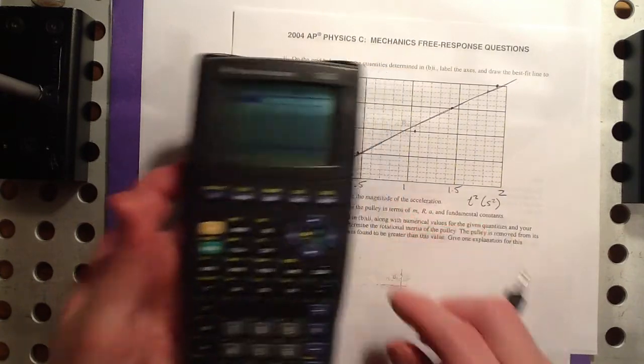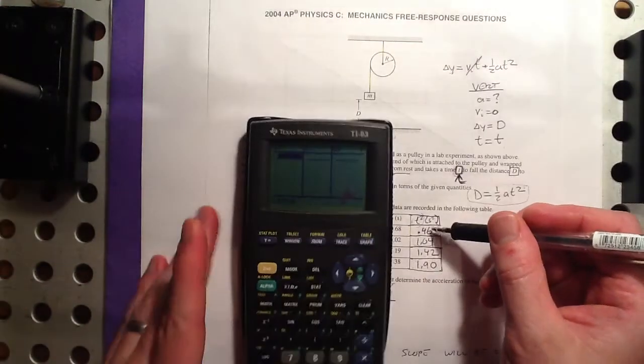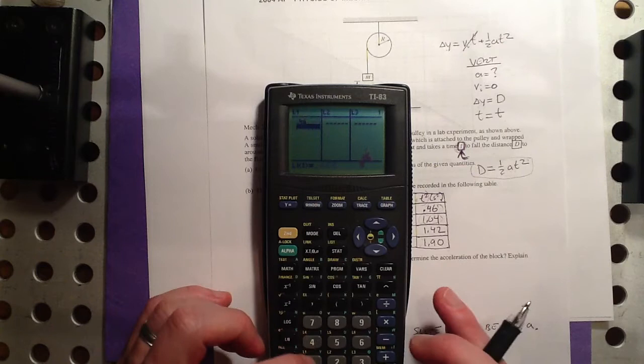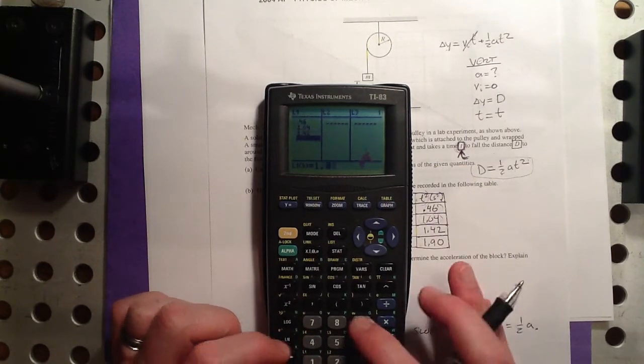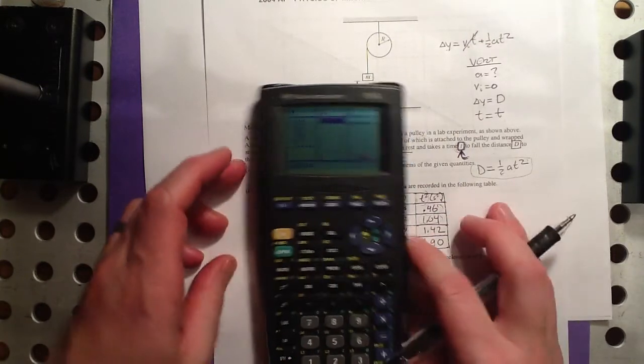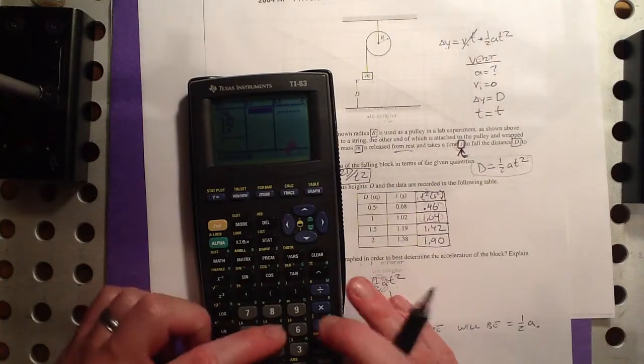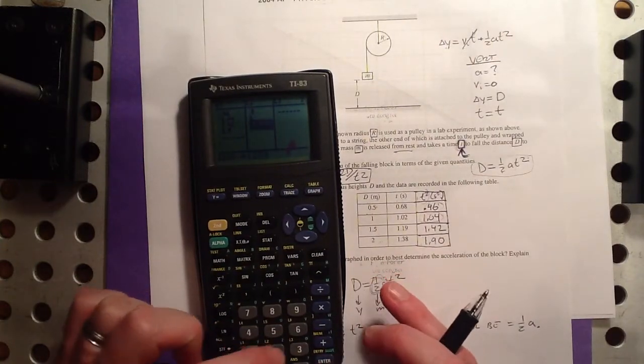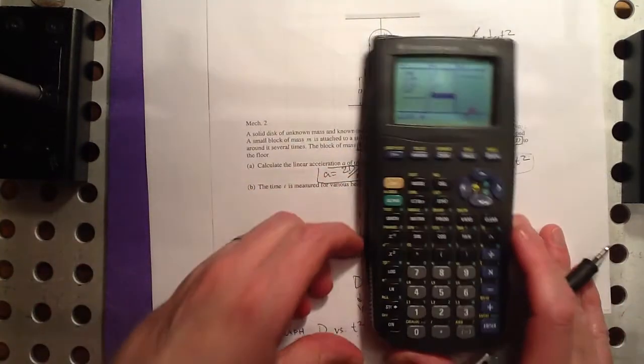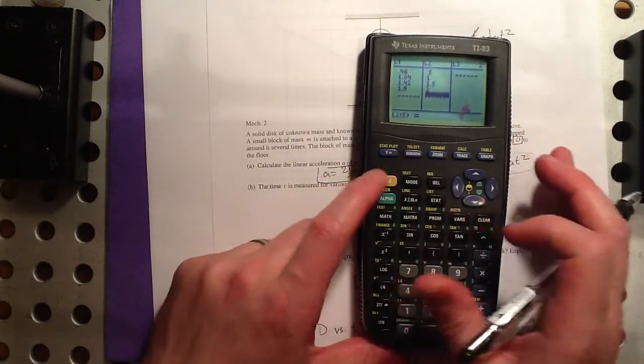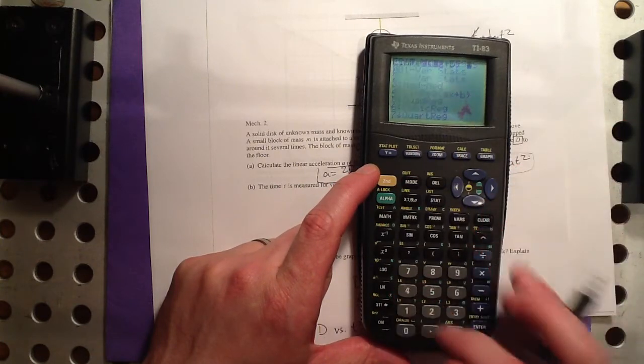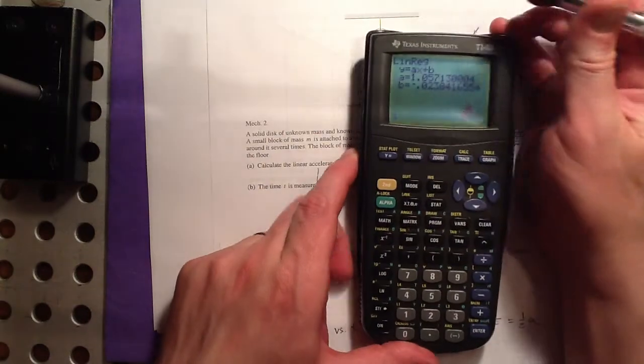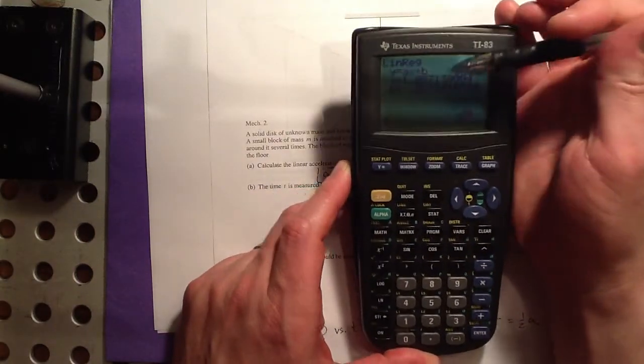And in L1, I have the t squared values, that's 0.46, 1.04, 1.42, and 1.9. And then, in these ones, I just have 0.5, 1, 1.5, and 2. So, there are our data points, and we go to statcalculate, we want a linear regression, number 4, and the slope of that looks like it is 1.057.